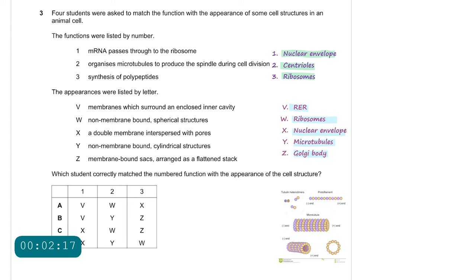Question number 3. Four students were asked to match the function with the appearance of some cell structures in an animal cell. The functions were listed by number. Starting with point 1: mRNA passes through to the ribosome. This must be the nuclear envelope, because when mRNA is synthesized during transcription, it passes out of the nucleus through the nuclear pores in the nuclear envelope in order to reach the ribosome for translation.